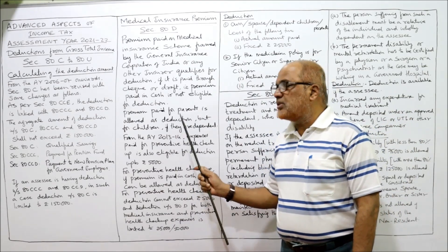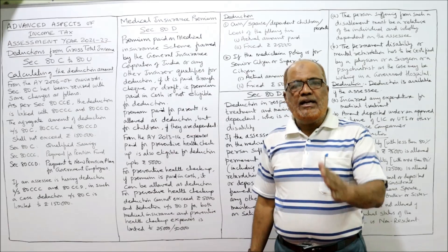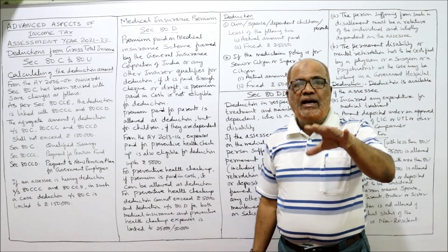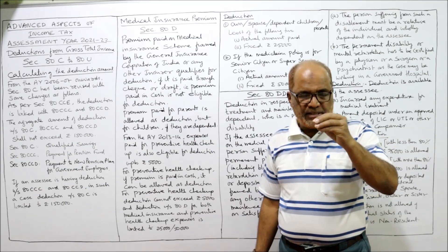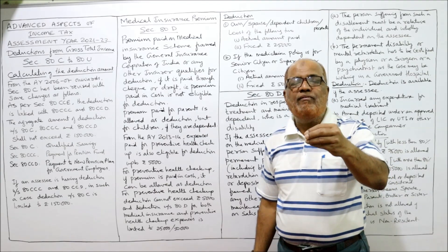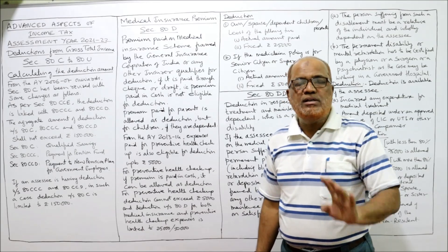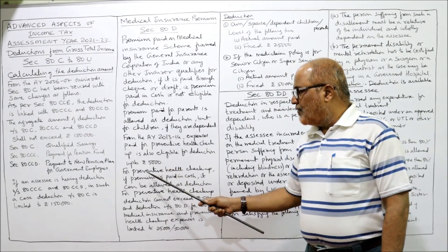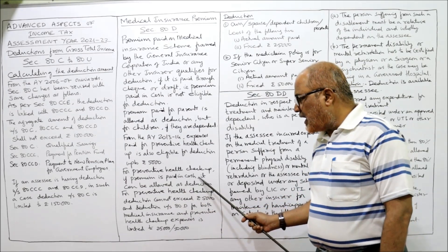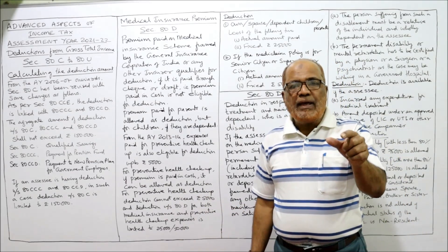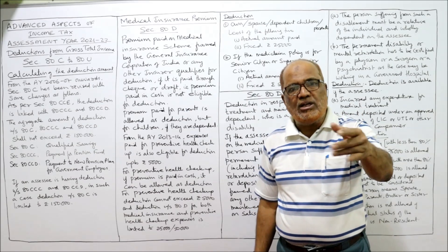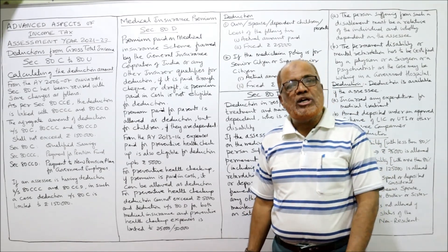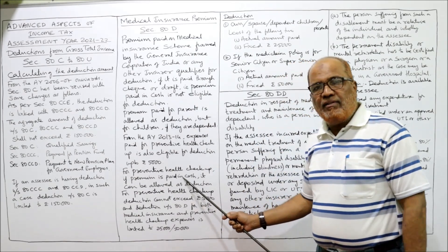Before the year 2013-14, only one deduction was there — medical insurance premium paid. But from 2013-14 onwards, preventive health check-up expenses are also eligible for deduction under section 80D, but only up to Rs. 5,000. Importantly, for preventive health check-up, the premium can be paid in cash and it will still be allowed as deduction. But for medical insurance premium, it should be paid only through cheque or draft — cash is not allowed.